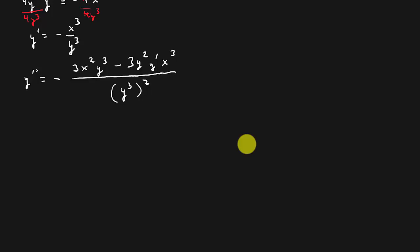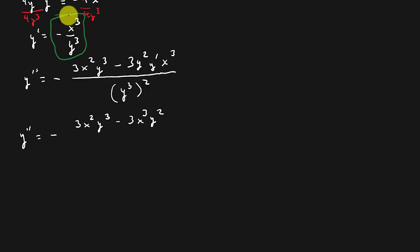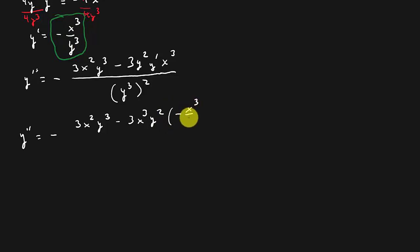So y double prime equals negative: that's 3x squared y cubed minus 3x cubed y squared times y prime. Now, y prime is negative x cubed over y cubed, so in place of y prime I'm going to substitute negative x cubed over y cubed. And that's all over y to the sixth.